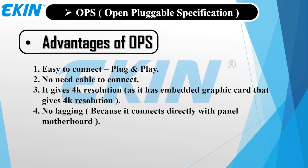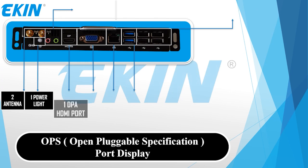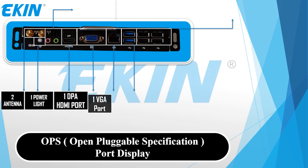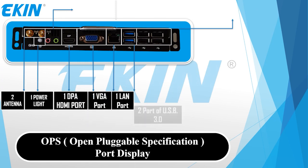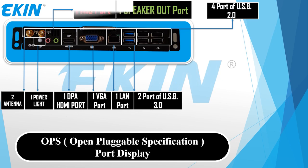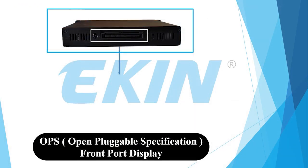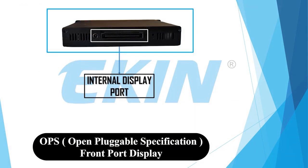What are the ports available in this OPS device? The ports are: 2 antenna ports, 1 power light, 1 DisplayPort and 1 HDMI port, 1 VGA port, 1 LAN port, 2 USB 3.0 ports, 4 USB 2.0 ports, 1 mic port and 1 speaker output. And the most important port is the internal display port. With the help of this port, your panel gets connectivity with the device and your panel switches into Windows.